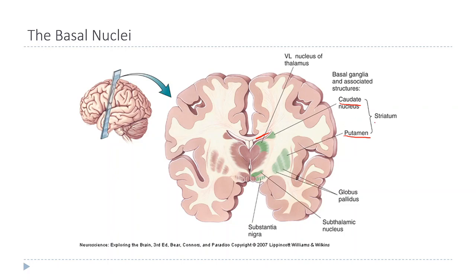Together the caudate and putamen are sometimes called the caudate putamen, or the striatum. The word striatum means striped or layered, because in the homologous structure in a rat brain — where the caudate and putamen are not separated — white matter fibers running through it give it a striped appearance when dissected. In humans and primates, the internal capsule, a large bundle of axons, splits the structure into two.